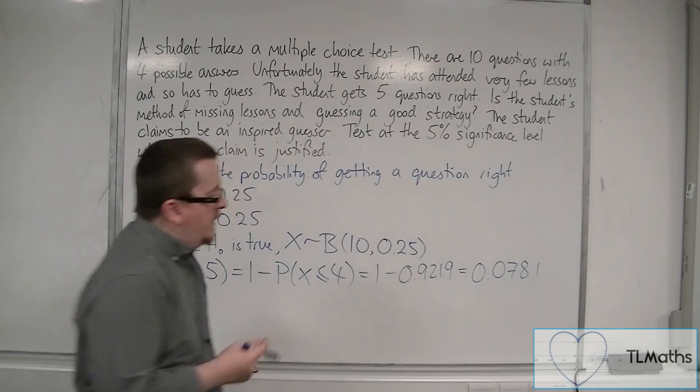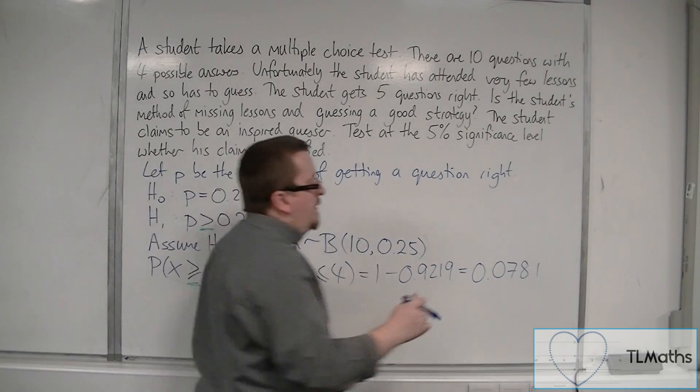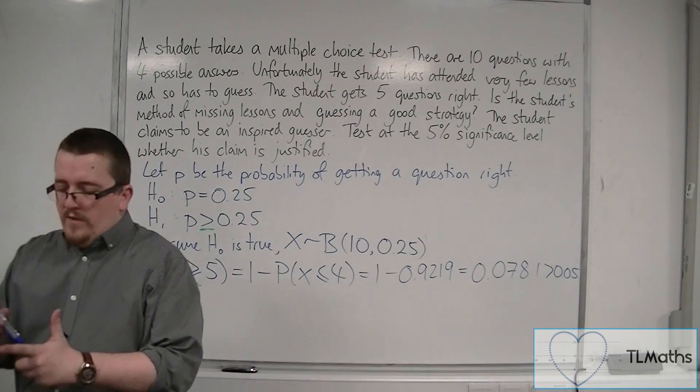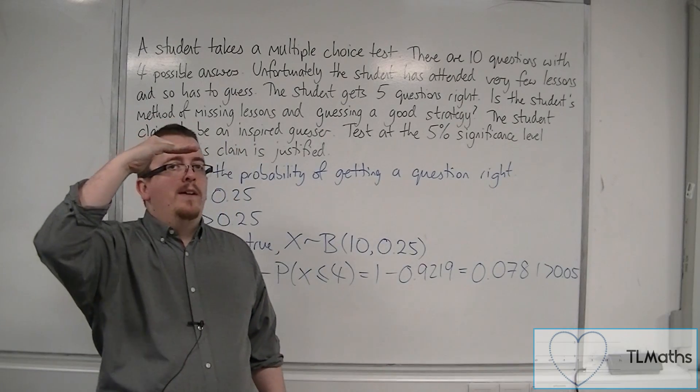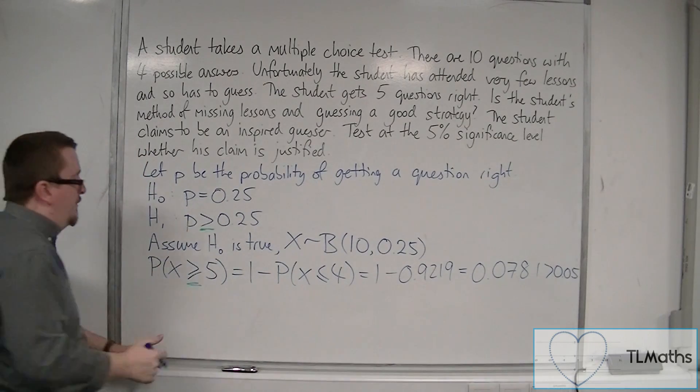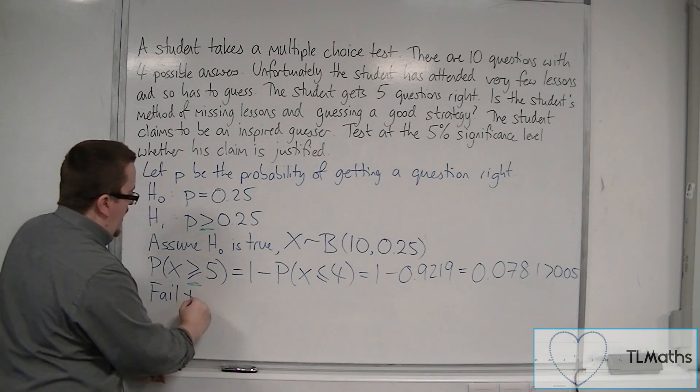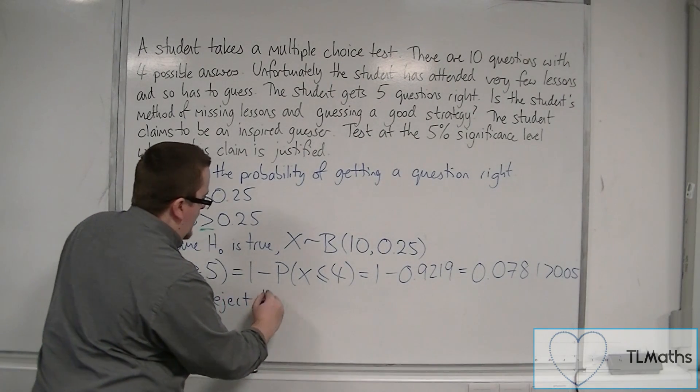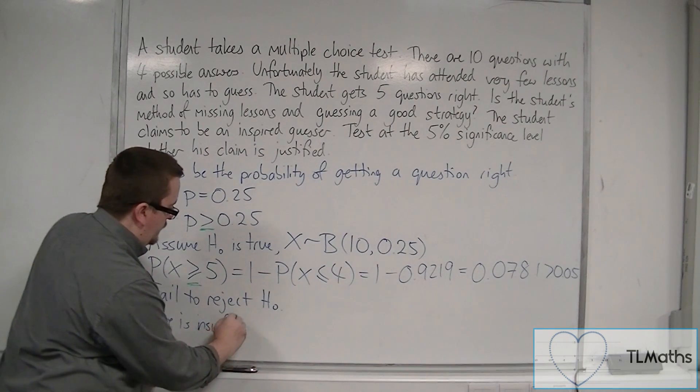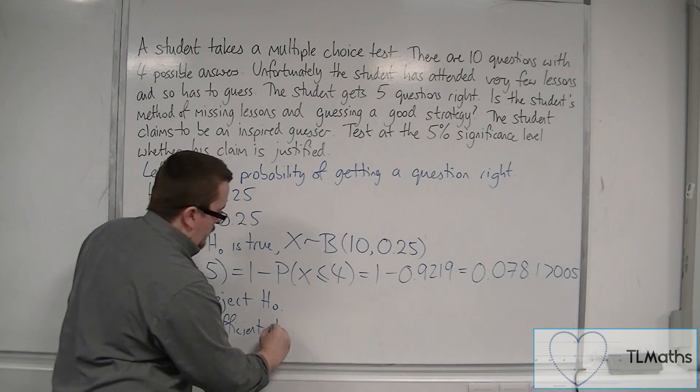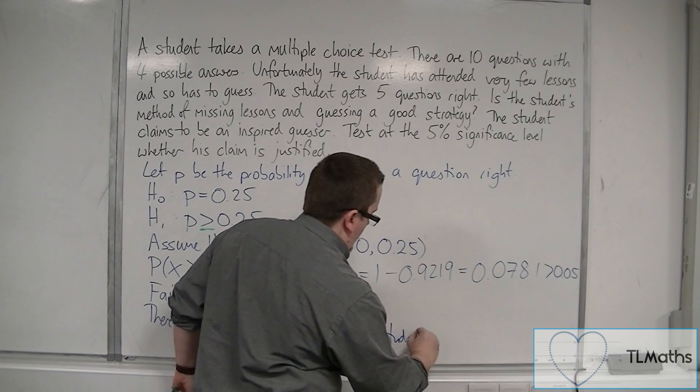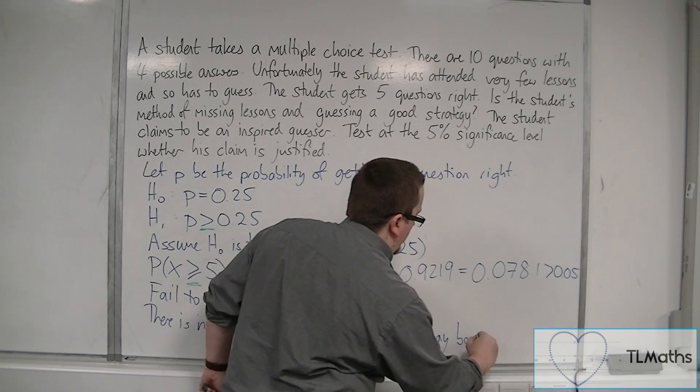So that's the probability that I'm looking for. Now that is greater than the 5% significance level. So the probability that we've looked at hasn't quite reached that significance level. Because it hasn't quite reached it, it's not less than 0.05, we fail to reject the null hypothesis.